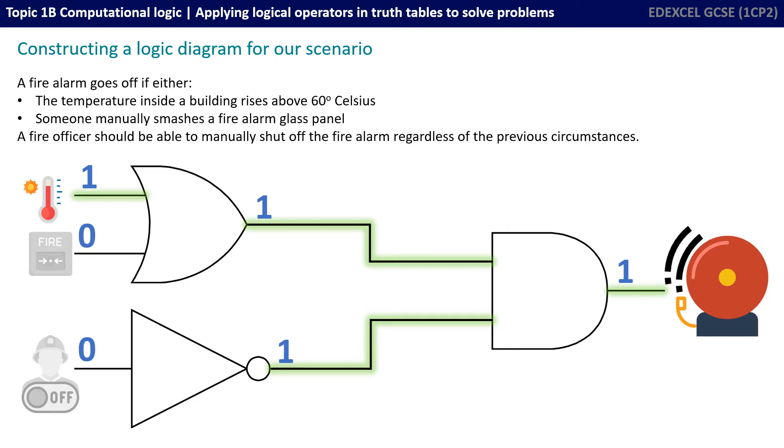We only need one input for an OR gate to be true and the output is true. So, now we have a one coming out of an OR gate, a one coming out of the NOT gate.